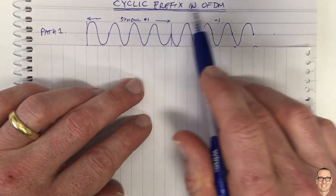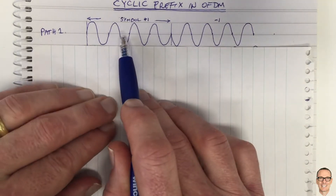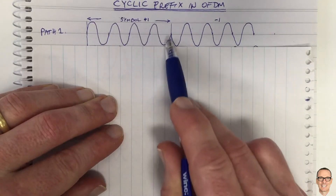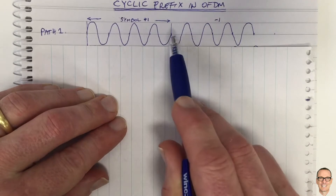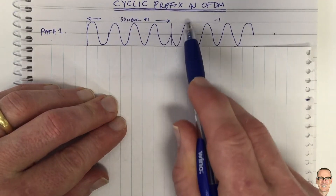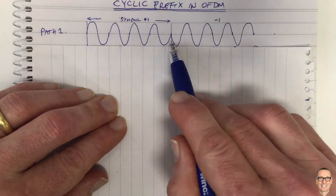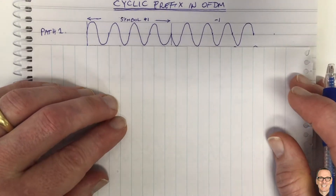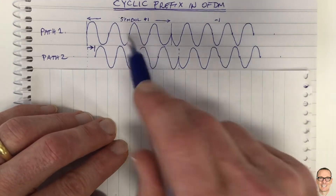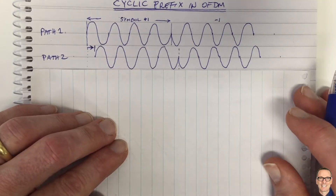Let's look at the cyclic prefix in OFDM, starting with a single carrier using BPSK. Here's a symbol that is a positive one — a carrier waveform multiplied by positive one — and then in the next symbol period we send a negative one, so it's the carrier waveform multiplied by negative one. Let's think about this transition between the two symbols, especially in a multipath environment where there's a second path — maybe a direct line of sight and one that's bounced off a wall. In practice there are many paths, but let's just consider one.